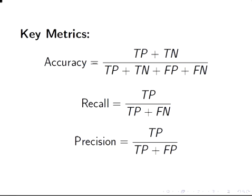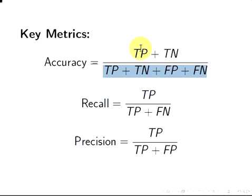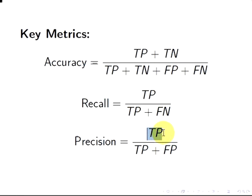The key metrics are as follows: accuracy, recall and precision. Accuracy is the total number of correct classifications divided by the total number of cases — very straightforward. Recall is the total number of true positives divided by the total number of actual positives. And precision is the total number of true positives divided by the total number of predicted positives, which is true positives plus false positives.